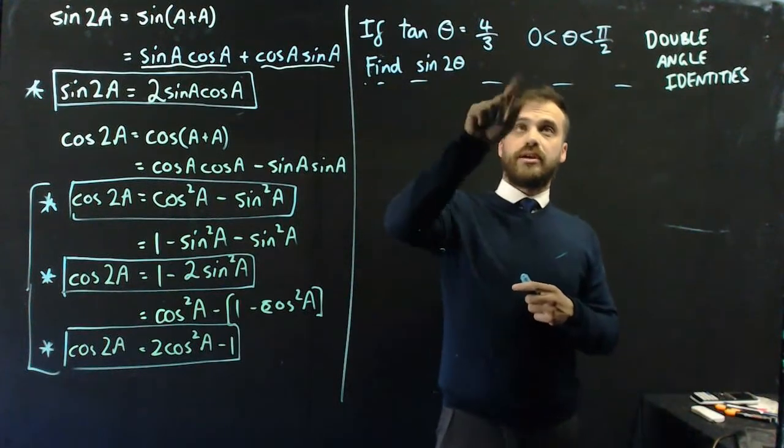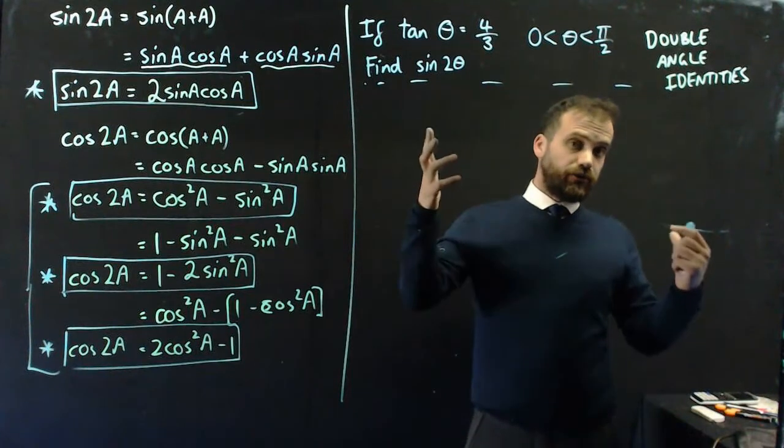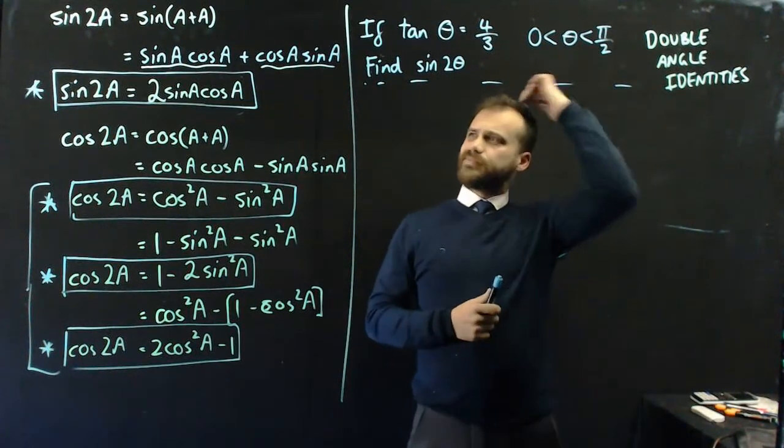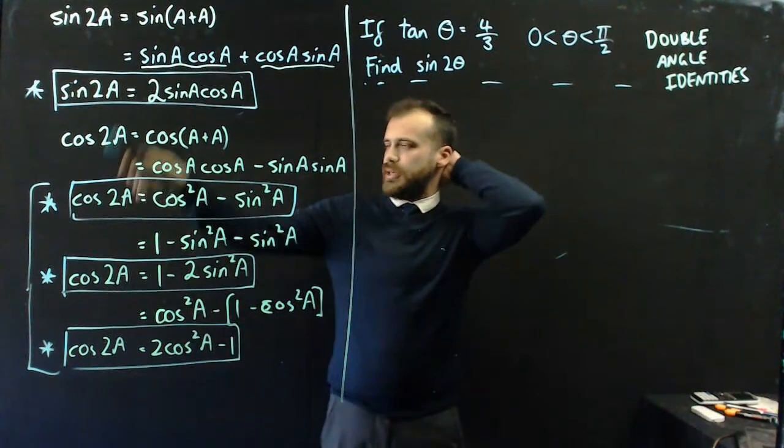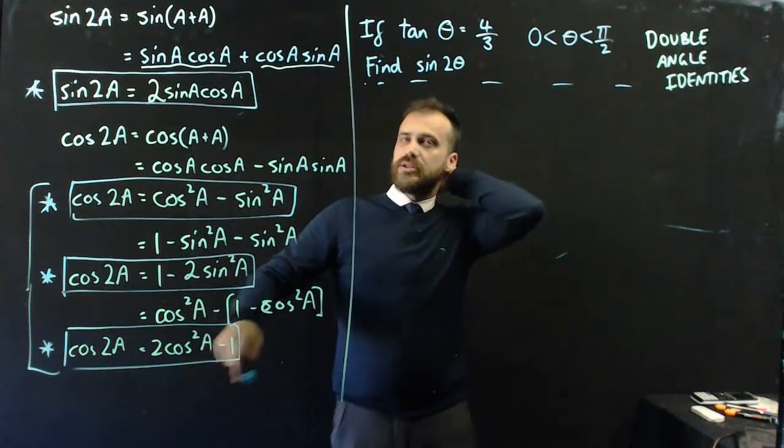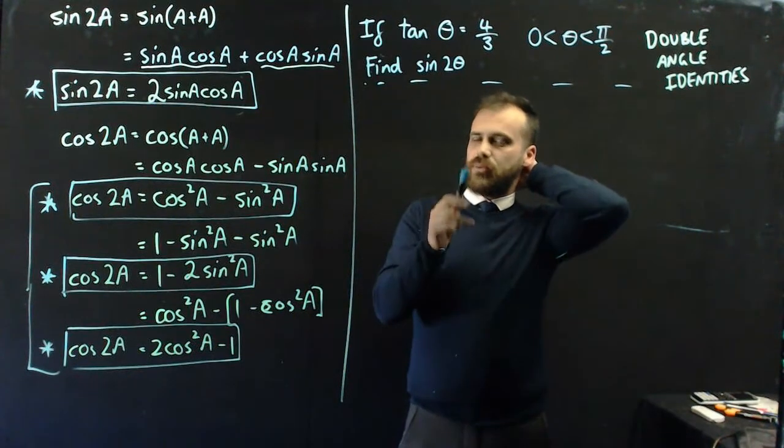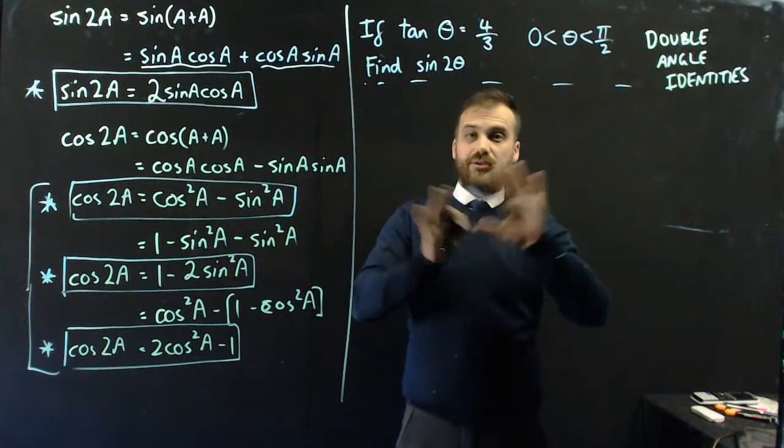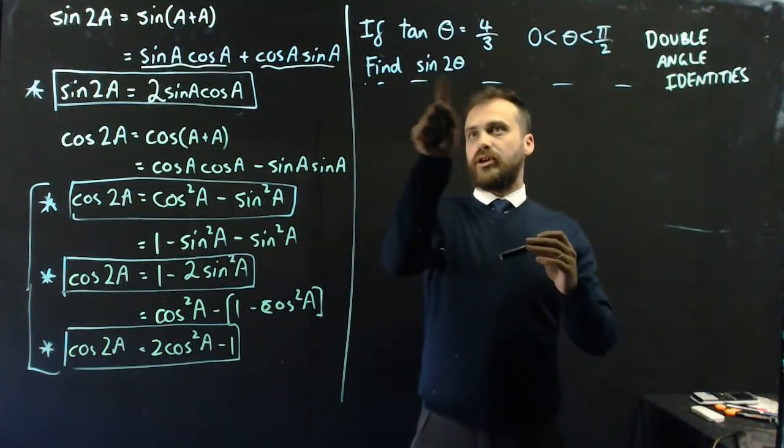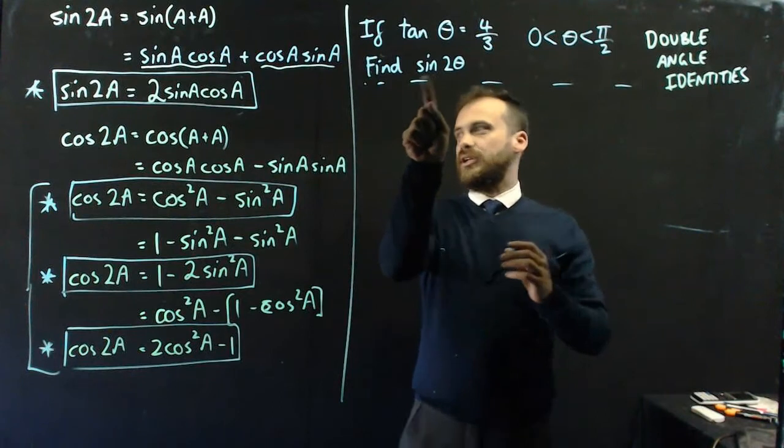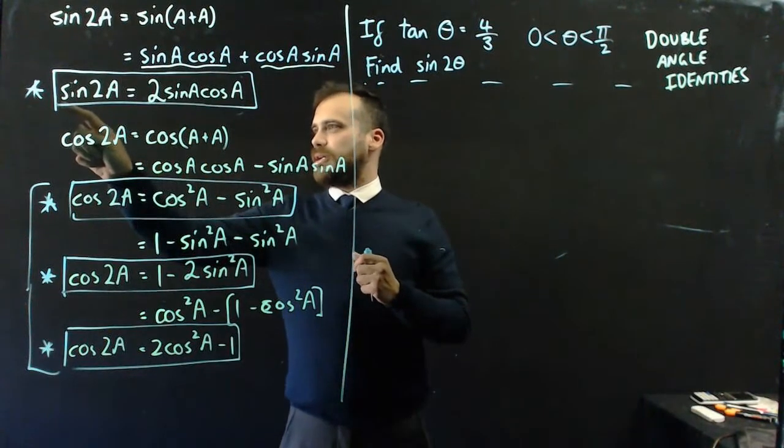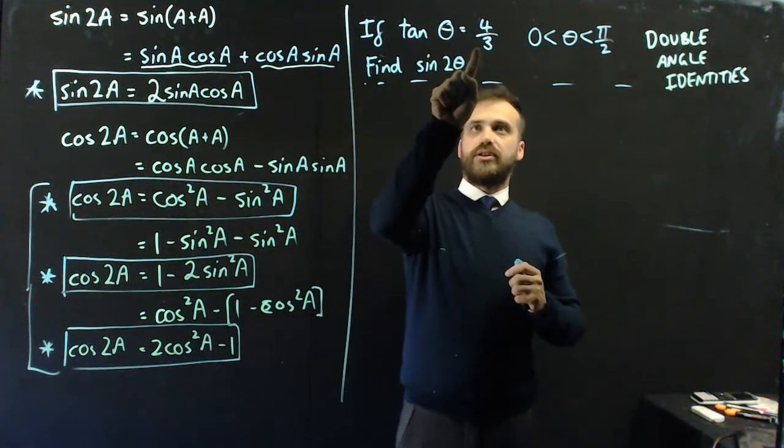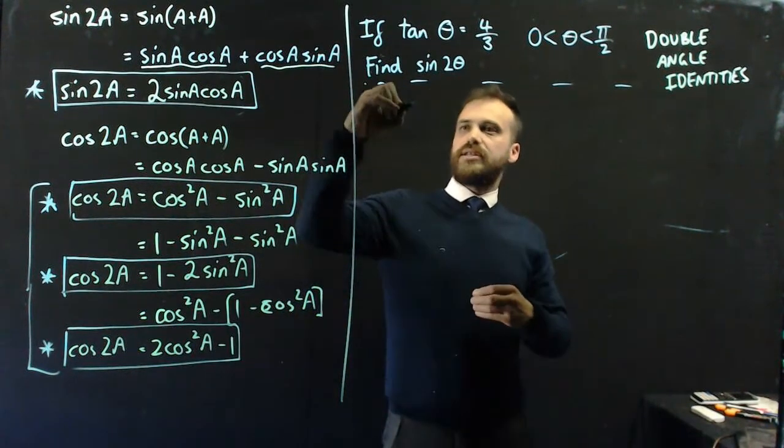If tan θ equals 4/3, where θ is between 0 and π/2, so that's in quadrant 1, find sin(2θ). Now, tan θ does not appear in any of these identities. So I'm going to need to find some way to get tan θ in terms of sine θ or cos θ. Because I'm trying to find a double angle identity for sine, and you can see that my double angle identity is sin(A)cos(A). I'm going to need to convert this to sine and cos.